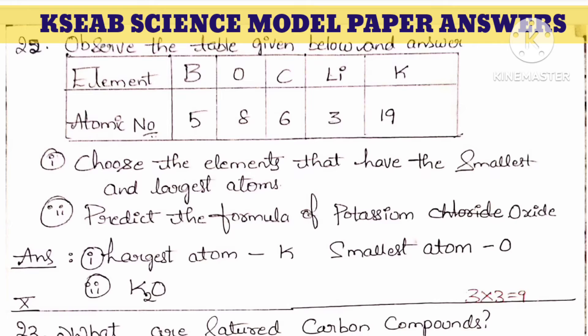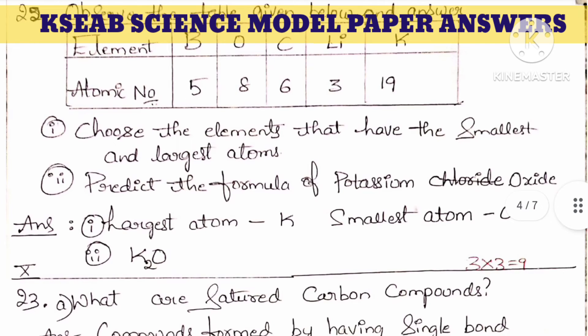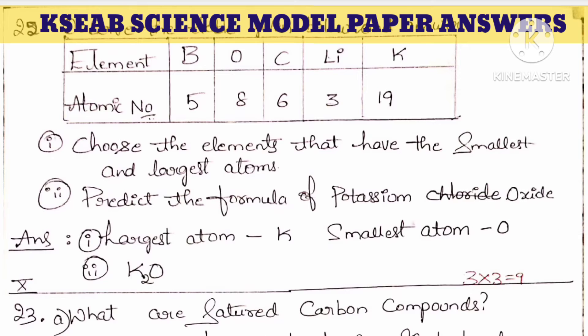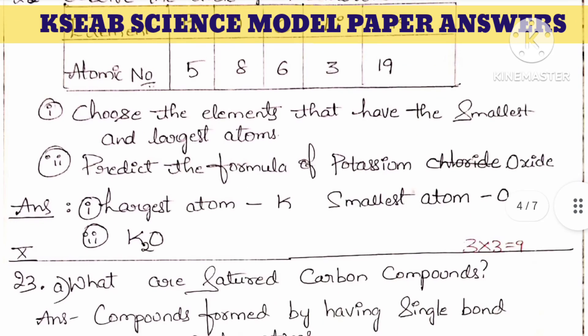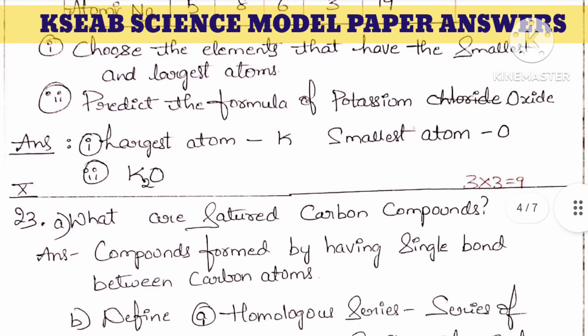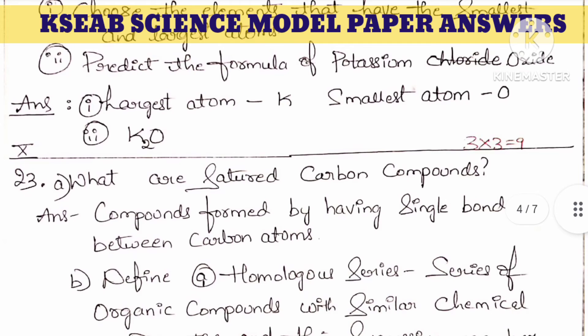Next question: observe the table given below. The elements are boron, oxygen, carbon, lithium, and potassium with atomic numbers 5, 8, 6, 3, and 19 respectively. Choose the elements with the smallest and largest atoms. Potassium (atomic number 19) has the largest atom, and oxygen (atomic number 8) is the smallest atom. As we move left to right atomic size decreases; top to bottom it increases. The formula of potassium oxide is K2O.